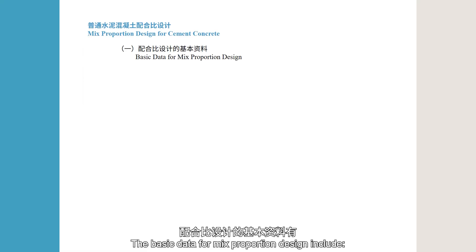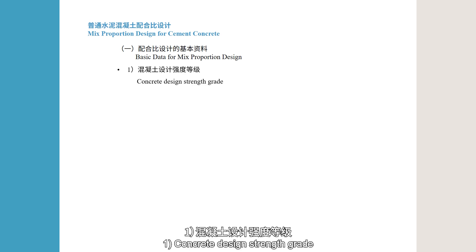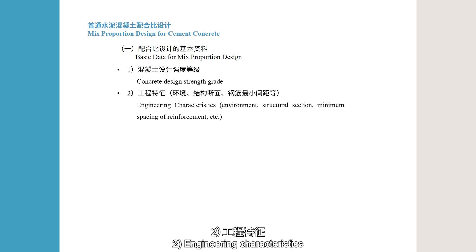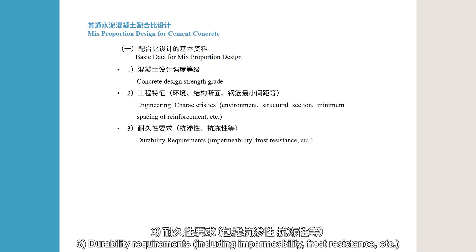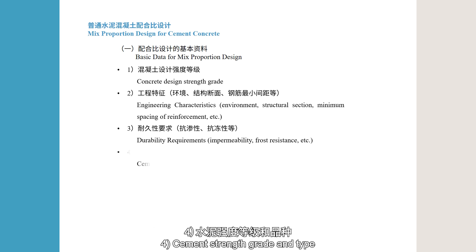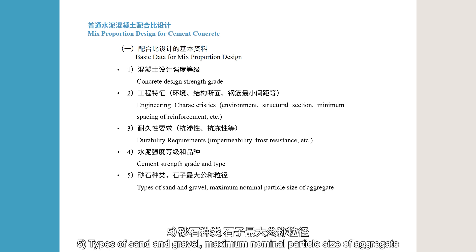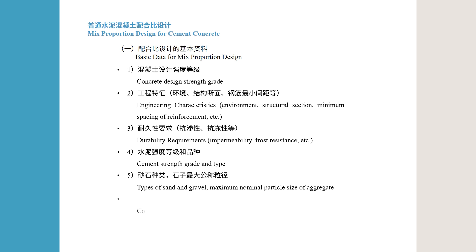The basic data for mixed proportion design include: 1. Concrete Design Strength Grade; 2. Engineering Characteristics, including Environment, Structural Section, Minimum Spacing of Reinforcement, etc.; 3. Durability Requirements, including Impermeability, Frost Resistance, etc.; 4. Cement Strength Grade and Type; 5. Types of Sand and Gravel, Maximum Nominal Particle Size of Aggregate; 6. Construction Methods.